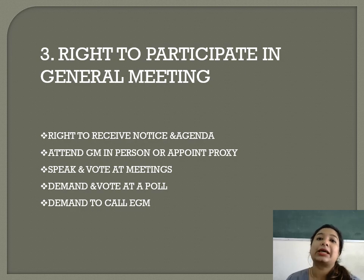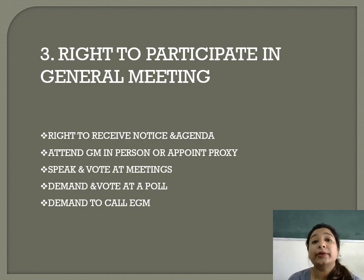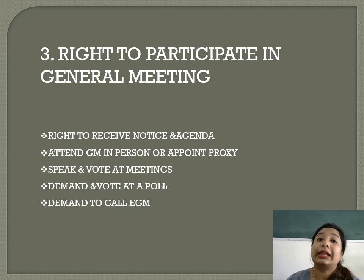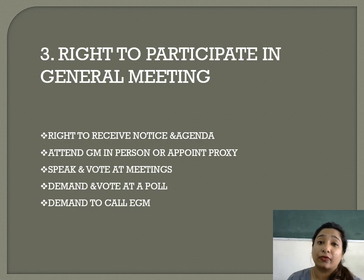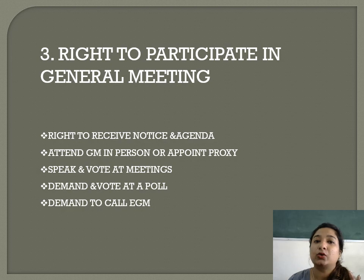Every member has the right to attend any type of meeting in person or to appoint a proxy if they cannot attend. The need for a proxy is so that a member's vote is not wasted. The member can tell the proxy what decision they want for the company, and accordingly the proxy can vote. Next is the right to speak and vote at meetings — this is the right of members, not proxies. A proxy is not allowed to give his opinion in the meeting; he is only there to vote.